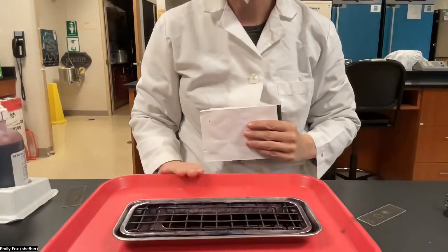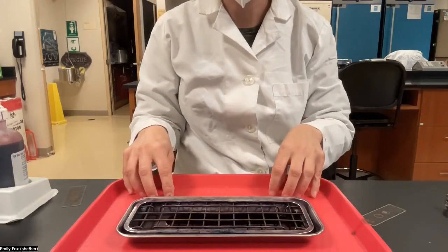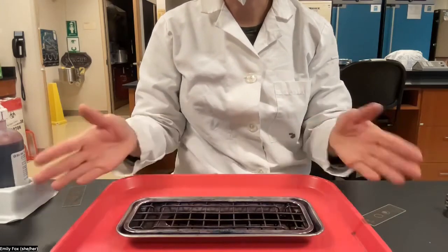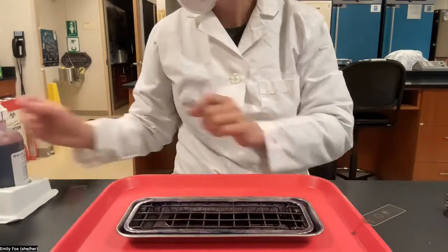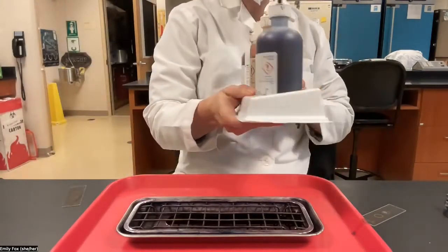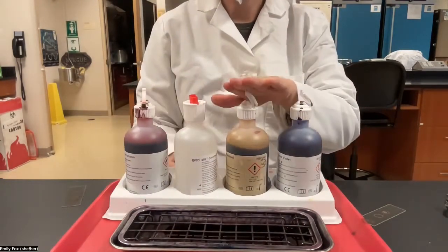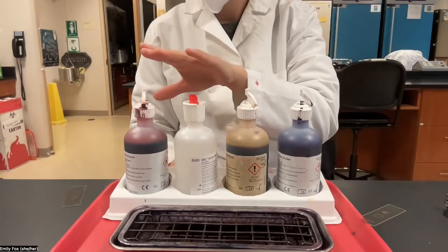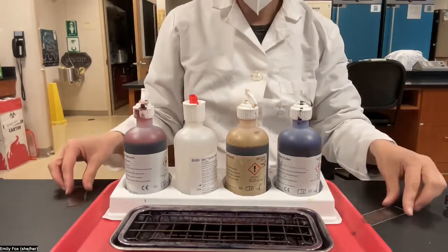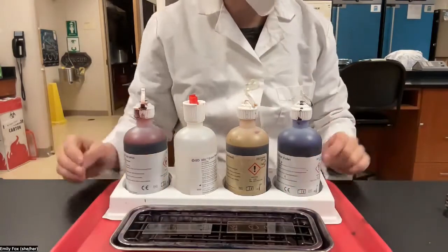Staining is always going to take place on the tray. We want to keep our staining tray in the cafeteria tray so that we don't splash stain all over the countertop. Here are our four stains. We're going to use crystal violet, iodine, alcohol, and safranin red. You can stain two slides at the same time, just put them both on the staining tray.